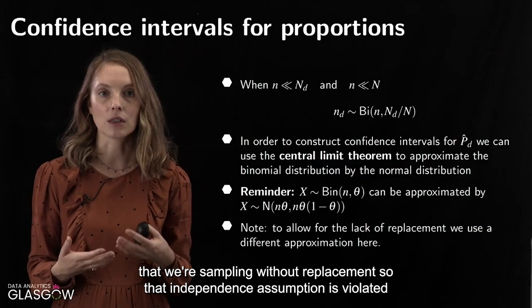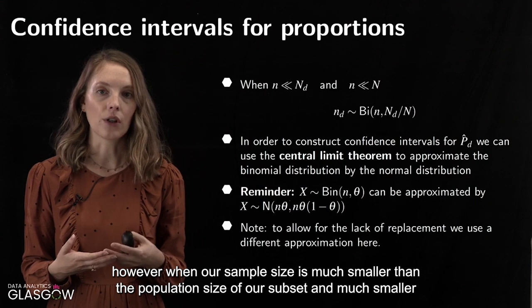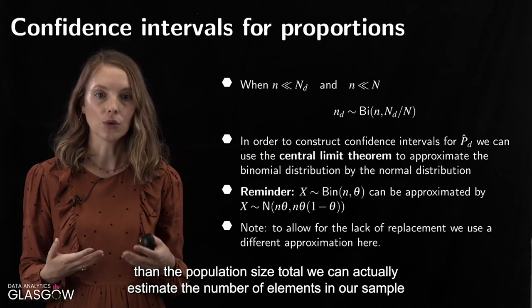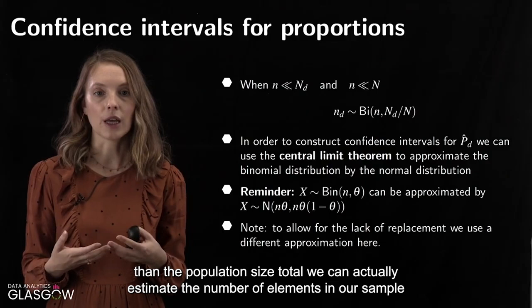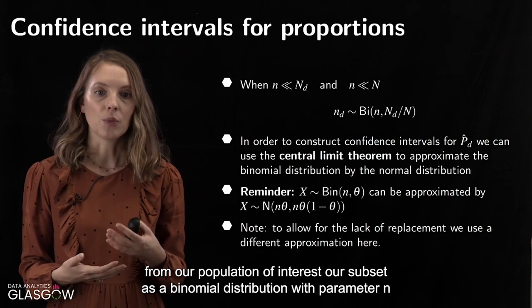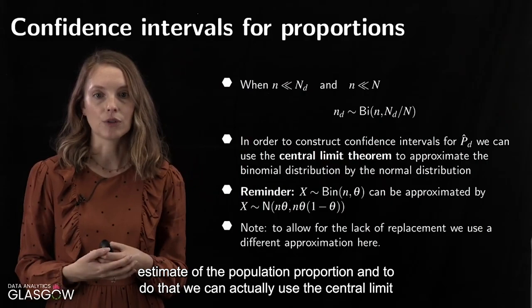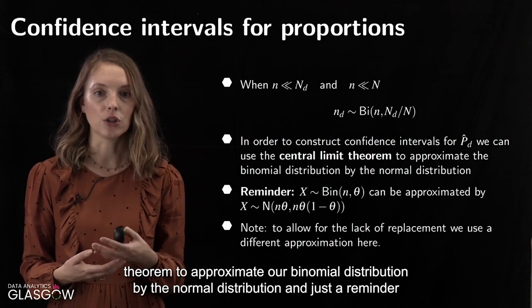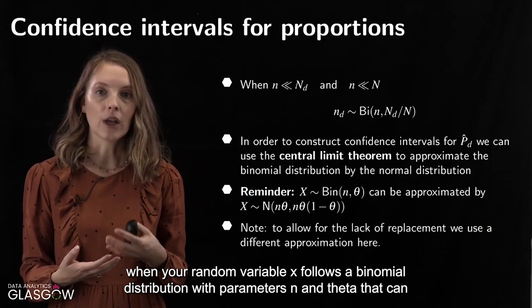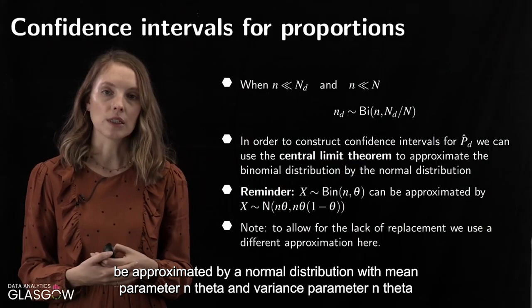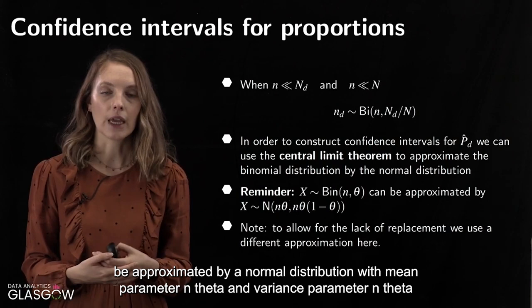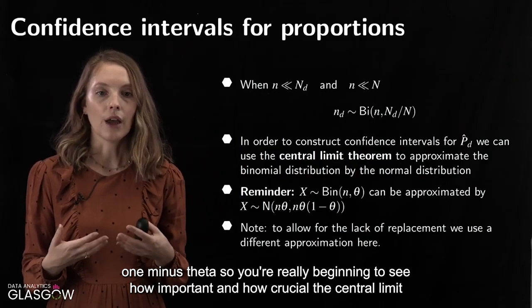To construct a confidence interval for the estimate of the population proportion, we can use the central limit theorem to approximate our binomial distribution by the normal distribution. As a reminder: when a random variable X follows a binomial distribution with parameters N and Theta, it can be approximated by a normal distribution with mean N·Theta and variance N·Theta·(1 minus Theta). The central limit theorem is crucial here, as it allows us to make this approximation.